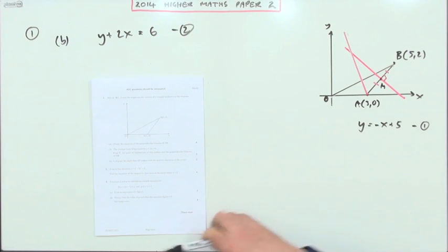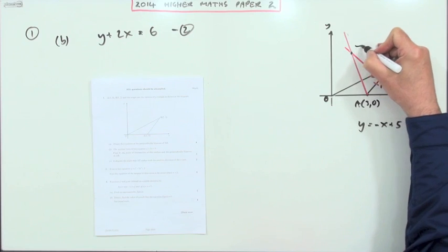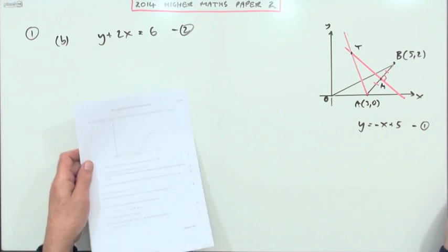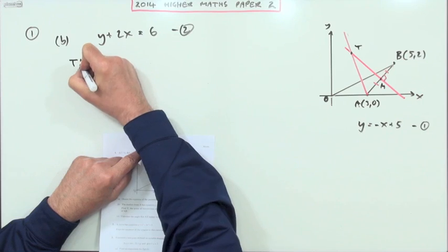Which means that where they cross will be at this point here—that's the point T that they're looking for. Well, simultaneous equations then for that point of intersection to find the point T.